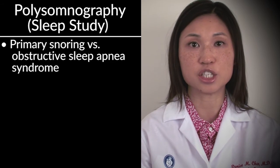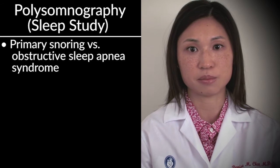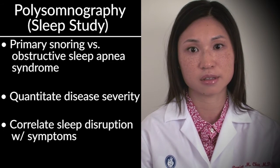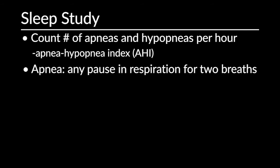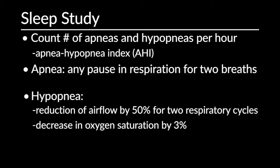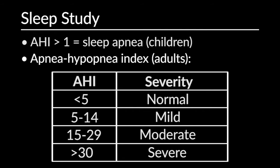After the history and physical, performing a polysomnography or sleep study can provide further information. This can help you differentiate between primary snoring and obstructive sleep apnea syndrome, quantitate the severity of disease, and correlate sleep disruption with symptoms. During the sleep study, we count the number of apneas and hypopneas per hour — the apnea hypopnea index. An apnea is any pause in respiration for two breaths, while a hypopnea is a reduction of airflow by 50% for two respiratory cycles, a decrease in oxygen saturation by 3%, or the patient wakes up. An apnea hypopnea index of greater than 1 is used to identify children with obstructive sleep apnea, as opposed to an index of 5 or more in adults.